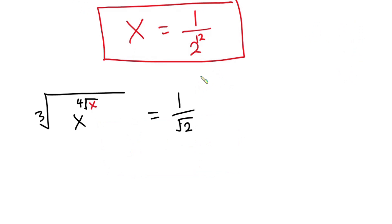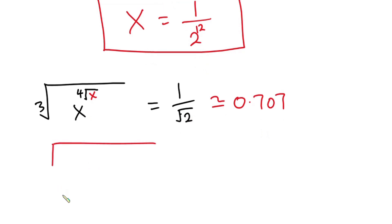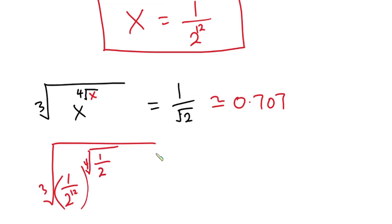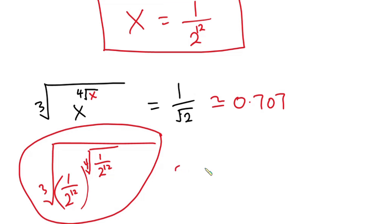Let's go ahead and verify our answer. As you can see, I have copied down the question. 1 over the square root of 2 is approximately equal to 0.707. Plugging our answer into the equation, we have the cube root of 1 over 2 to the power 12, to the power of the fourth root of 1 over 2 to the power 12. If you use a calculator to evaluate this, you'll get approximately 0.707. Use your calculator to check this and let me know the answer in the comment section.